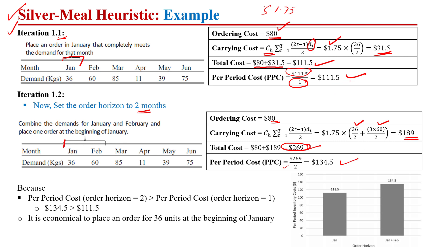Comparing planning horizon one ($111.50 per period) and planning horizon two ($134 per period), the smaller per period cost is $111.50. This indicates that to meet January's demand we should order at the start of January — we should not extend the order to also cover February. After the first iteration, we conclude: order at the start of January equal to the demand of January, which is 36.